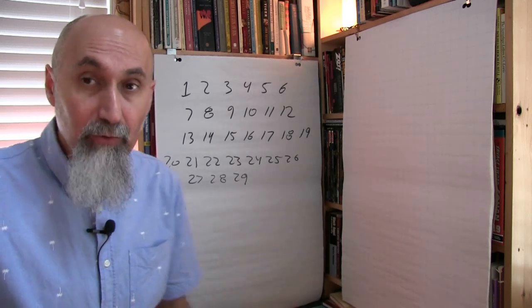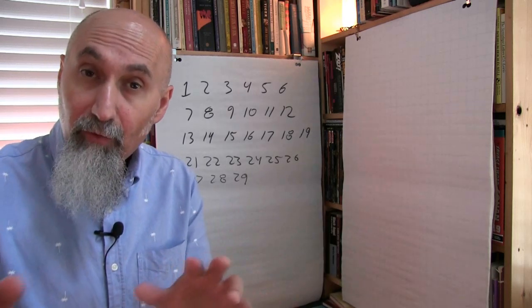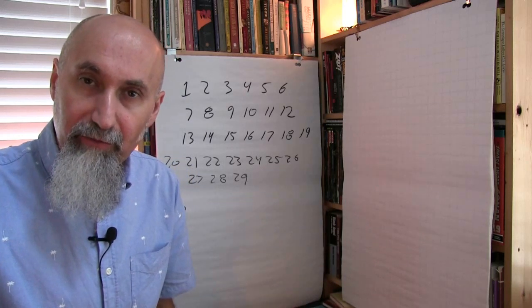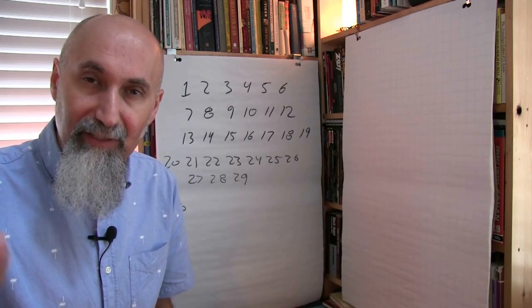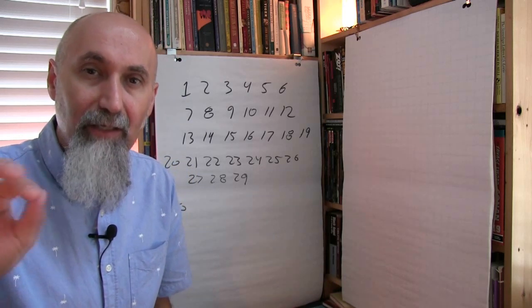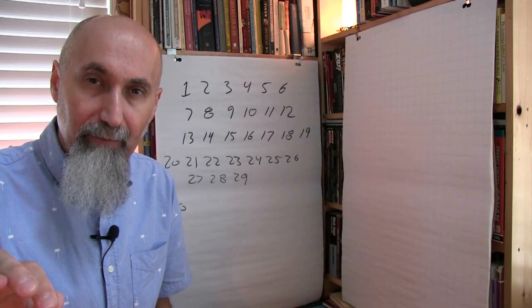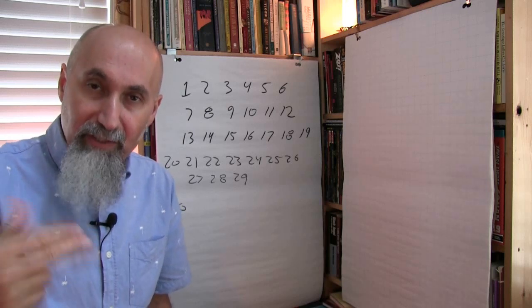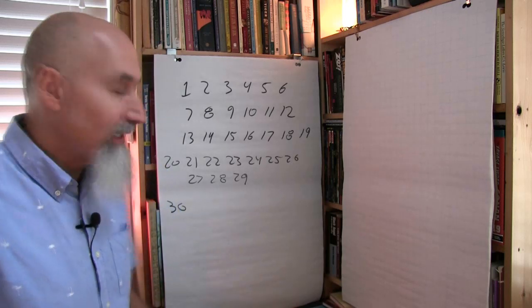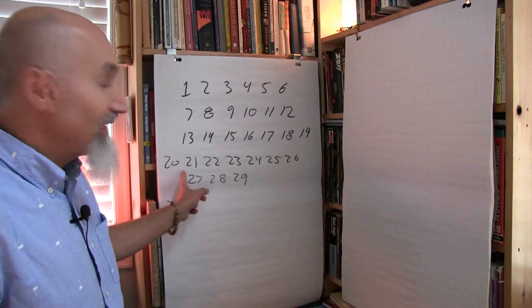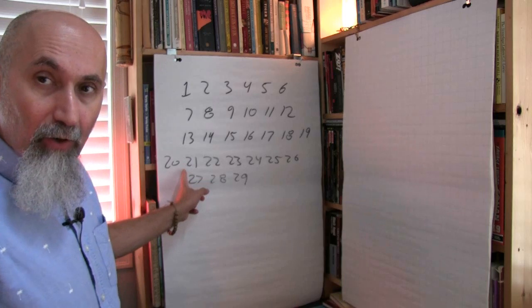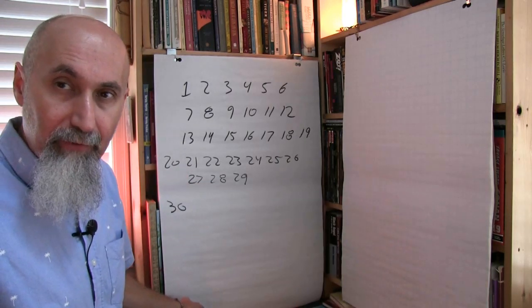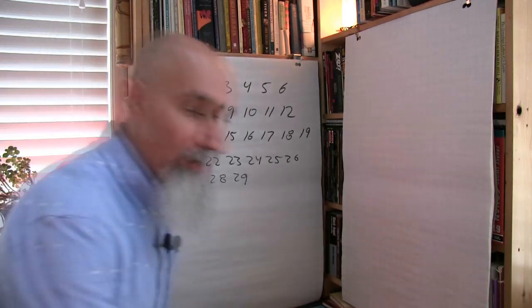So I get them to go 1, 2, 3, 4, 5, 6, 7, 8, 9, 10, 11, 12, 13, 14, 15, 16, 17, 18, 19, 20 — without their fingers. Once they're comfortable with that, I teach them all the way from 20 to 100.